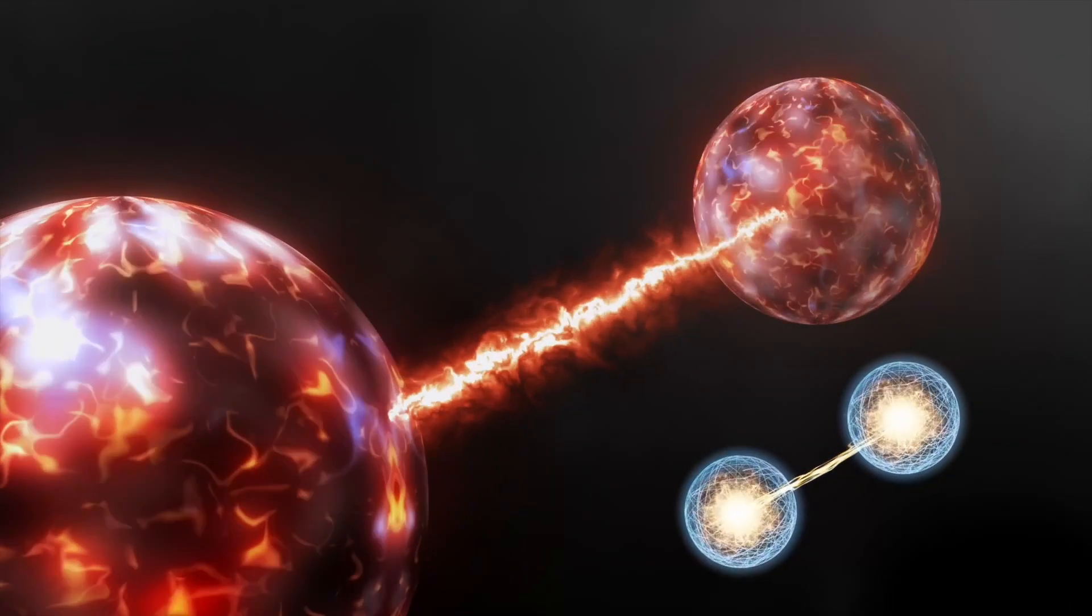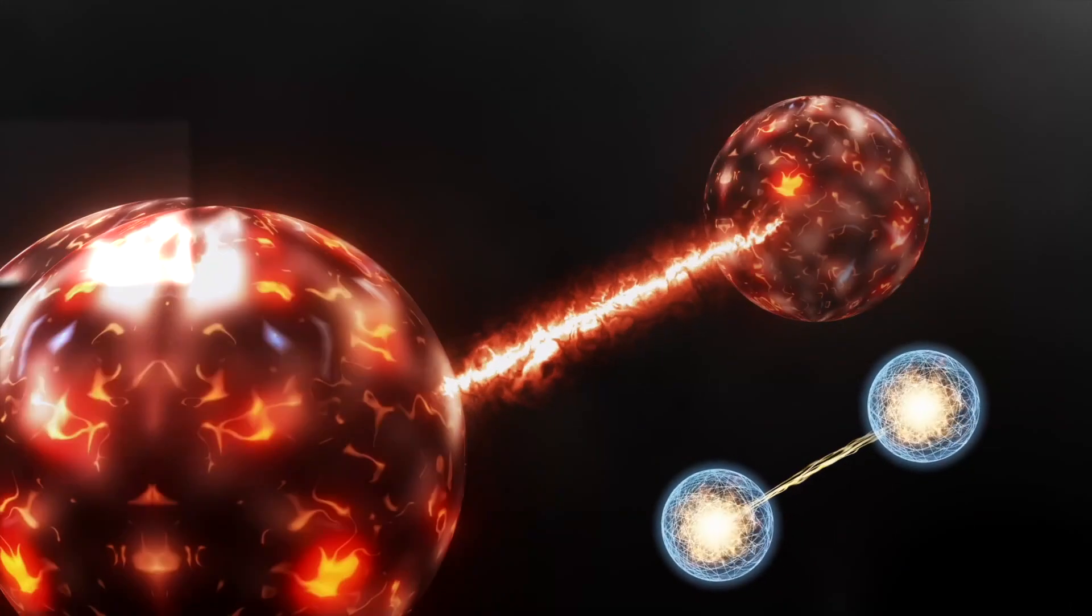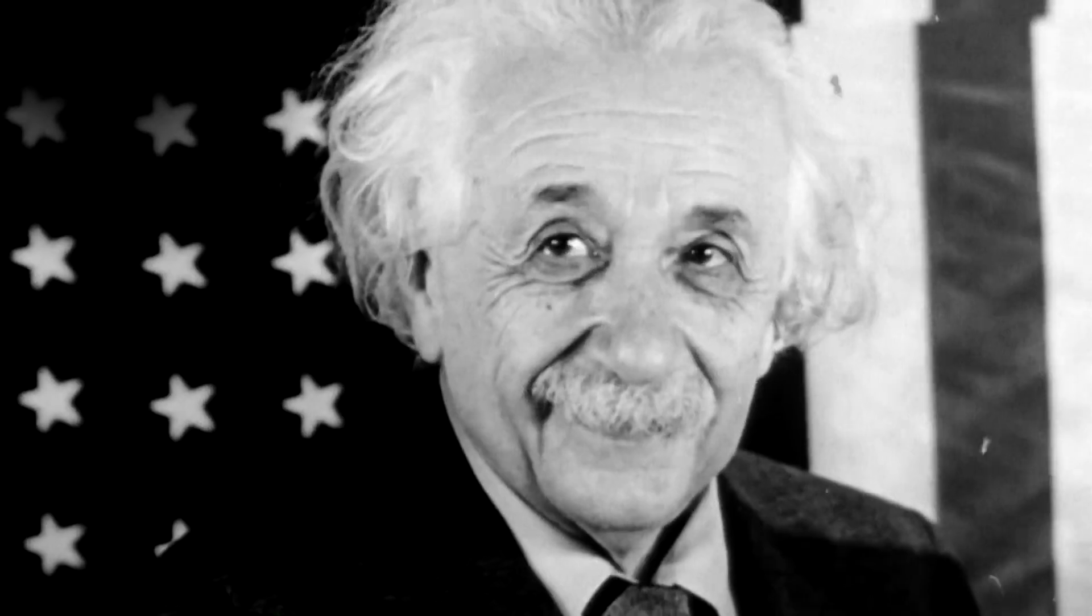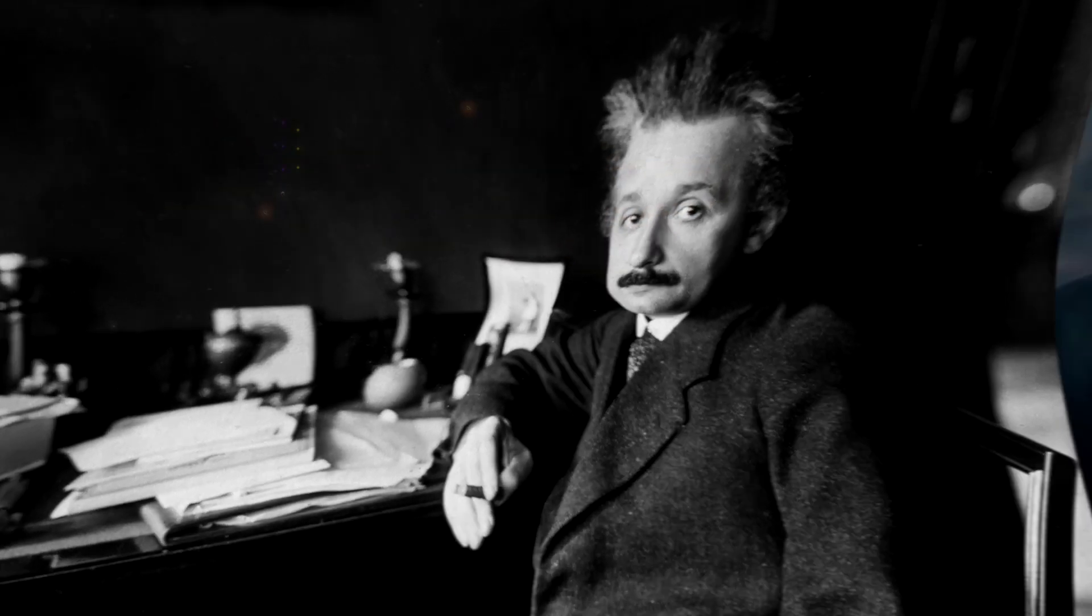Two entangled particles are connected through a mysterious and impossibly fast communication channel. When this phenomenon was first introduced to the scientific community, scientists like Einstein were weirded out enough to hate entanglement and gave it the name spooky action at a distance. Since then,